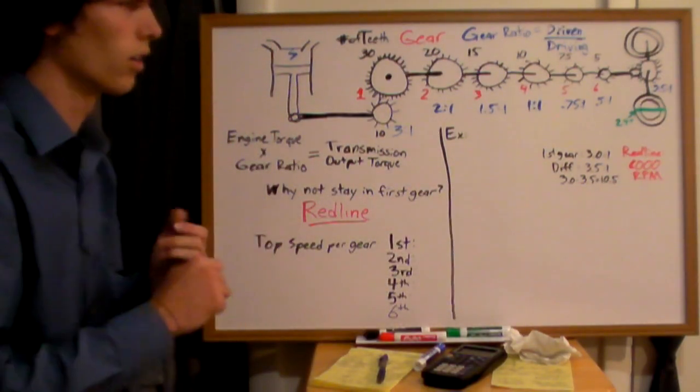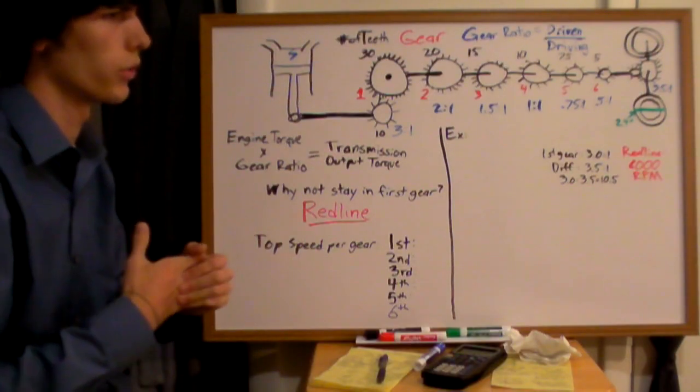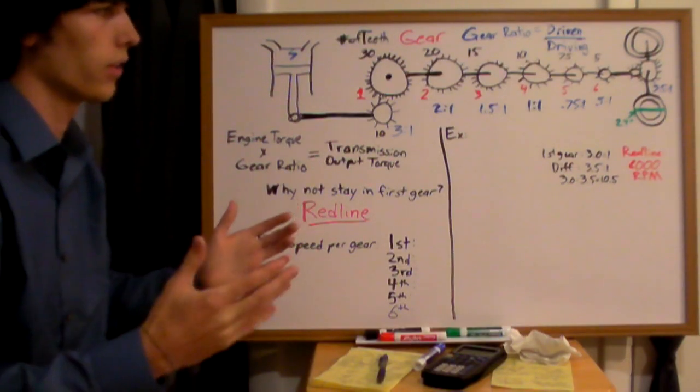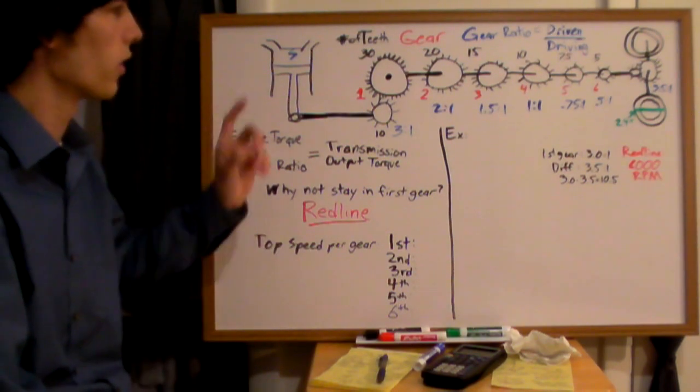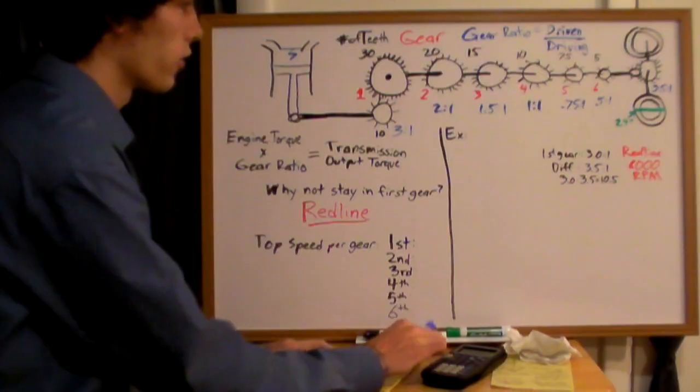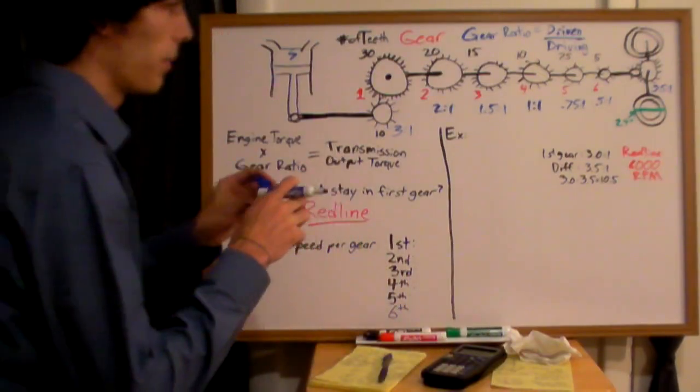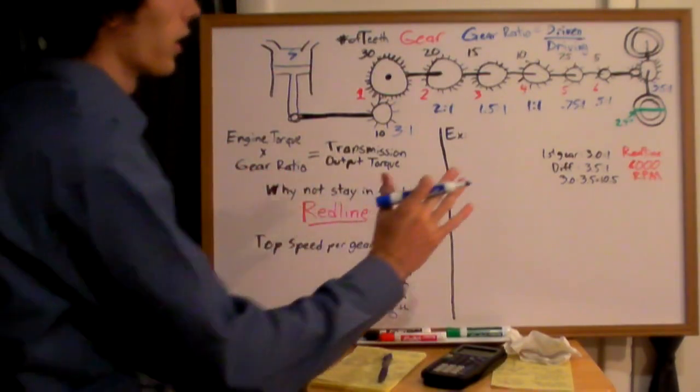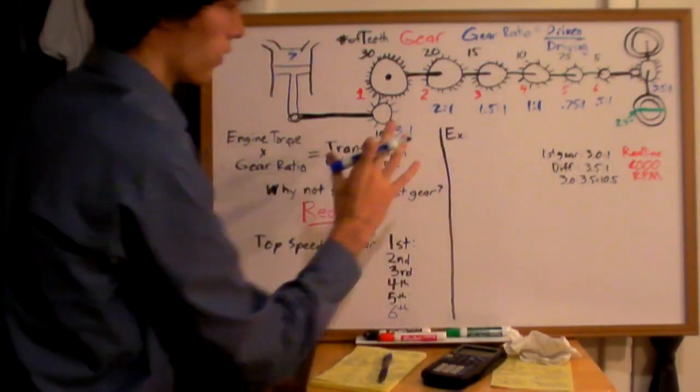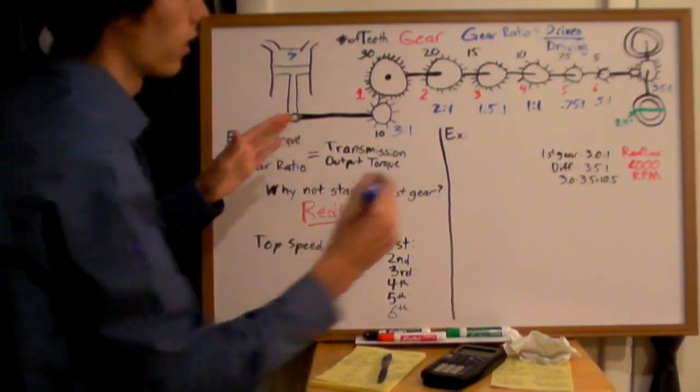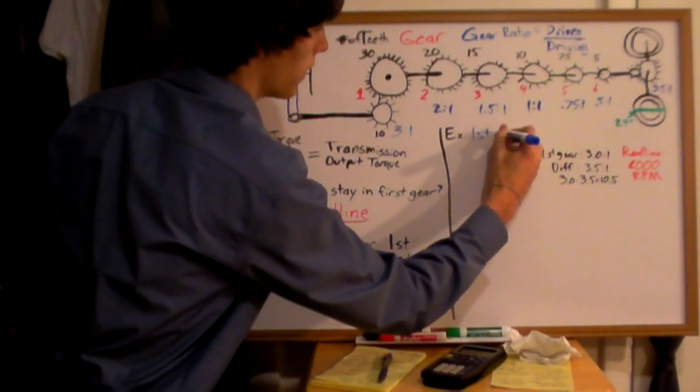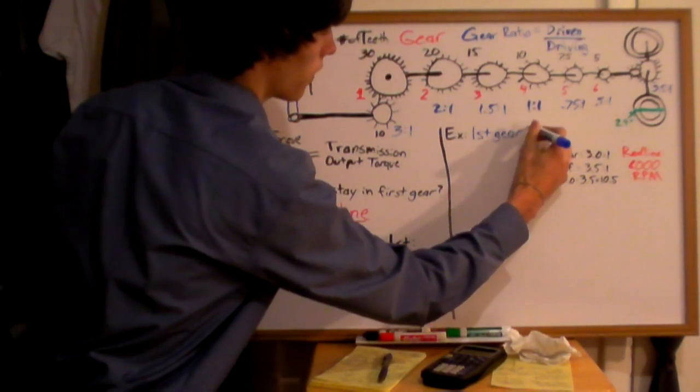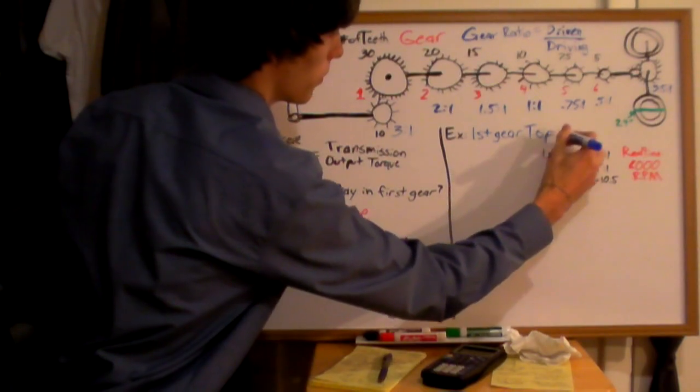Now you're saying, okay, so I have a red line. Why can't I still just stay in first gear and go up to 6,000? Well, your red line is going to limit your speed based on what gear you're in, and I'm going to try and explain that to you mathematically here. Okay, so we're in first gear. This is going to calculate our top speed, first gear, top speed.